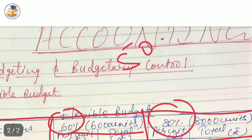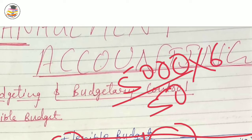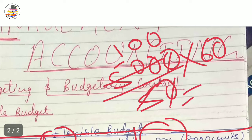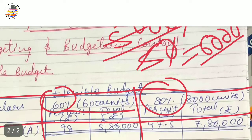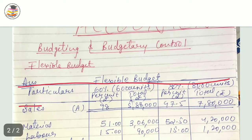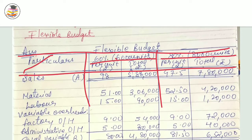At 50% capacity there are 5,000 units, so at 60% capacity it will be 6,000 units — that is 60 × 100 = 6,000 units. So here your format will be: 60% capacity — 6,000 units; 80% capacity — 8,000 units. Under particulars you will write per unit rupees and total rupees, because you have to find out both per unit and total. First make the format.